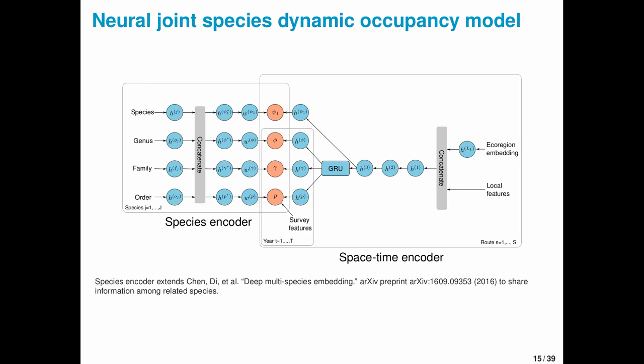For this particular neural joint species dynamic occupancy model, I want to highlight two components. One is a species encoder that maps species to species-specific weights that correspond to parameters of interest in our model. This extends the idea of deep multi-species embedding first described by Chen et al in 2016 to share information among related species in the same genus, family, or order.